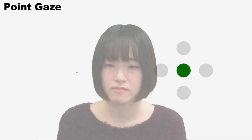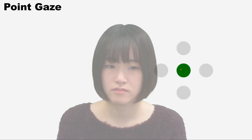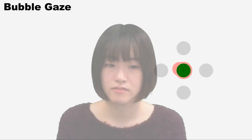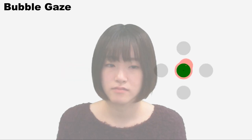Point gaze is a standard target selection method featuring an eye gaze interface. The shape of the cursor is a point, and when the cursor dwells inside an object for a certain period of time, the object is selected. Bubble gaze is our proposed technique, in which we combined a bubble cursor with an eye gaze interface.